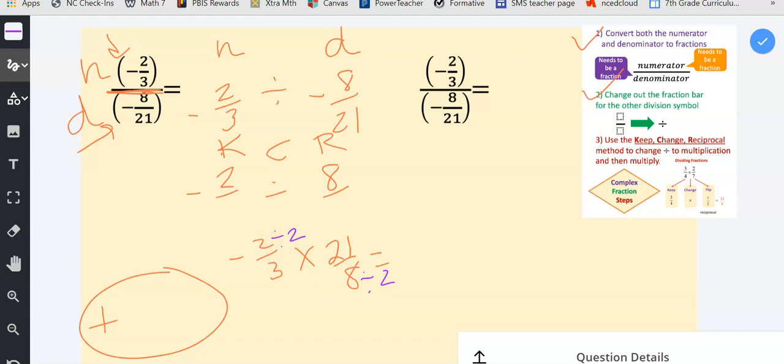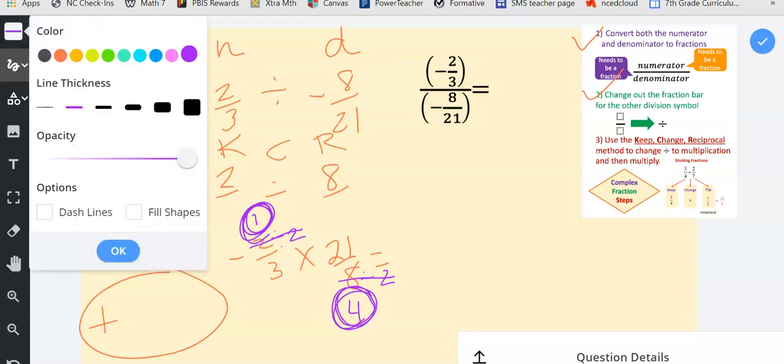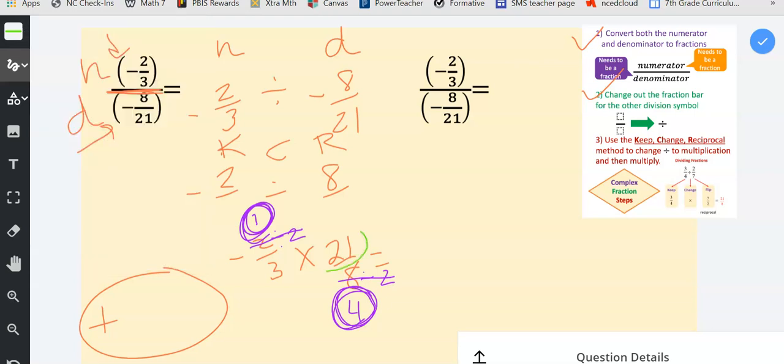When you reduce diagonally, make sure you're dividing both numbers by the same number. In this case, we divided each of these by two. And then I circle what's left over, so it's nice and clear the number that's left over that we're supposed to use. Then I can reduce diagonally this way as well. I can divide three and twenty-one by three. Twenty-one divided by three is seven, and three divided by three is one.